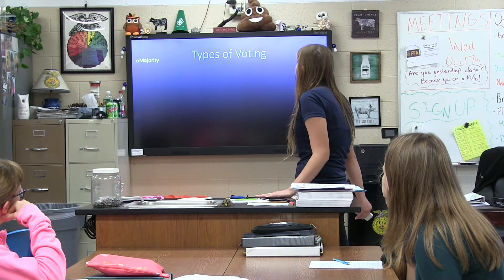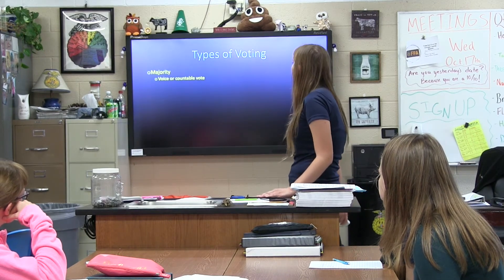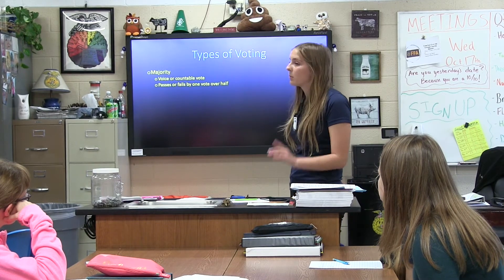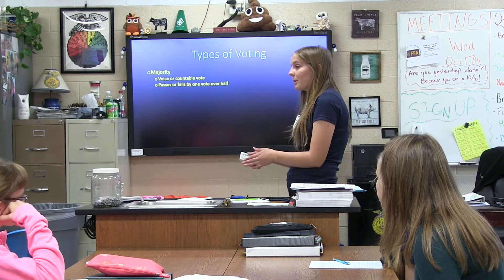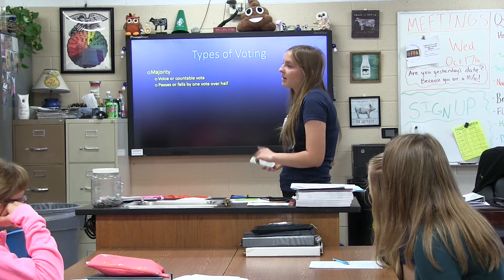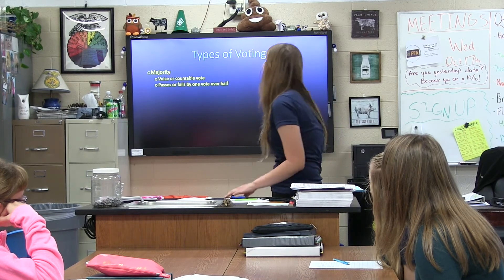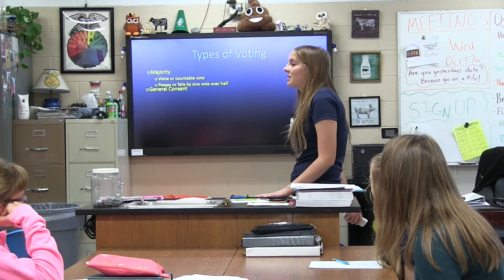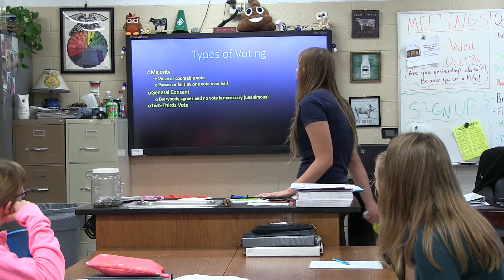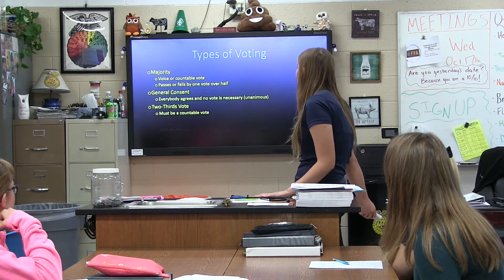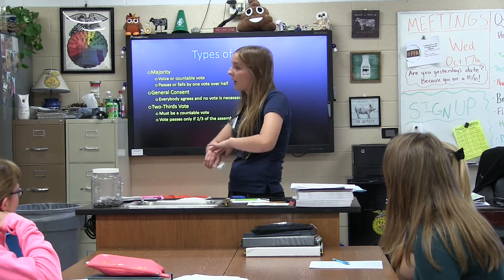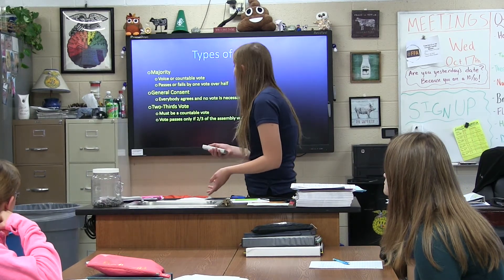Before we do those steps, there are three types of voting. There's majority, which is a voice or countable vote — it passes or fails by over half. General consent is when everyone agrees and there's no vote needed. And two-thirds, which is a counting vote, and it only passes if two-thirds of the people present are in favor.